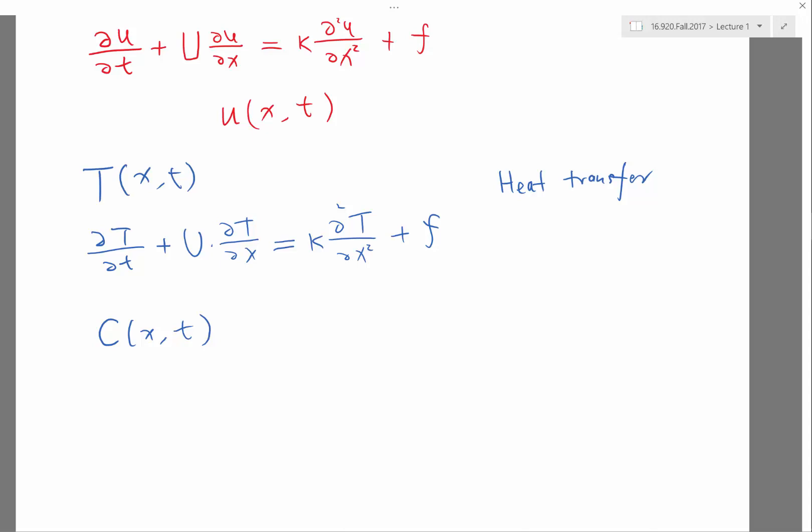Student question: So f, is it a function that depends on temperature or x or t, or is it a constant? It can be either. The thing that is important is that this term f is not going to be differentiated with respect to either x or t. That's what we call an algebraic term. These are all differential terms. So f may depend on anything but in an algebraic way. For example, it depends on the temperature locally but doesn't depend on the gradient of temperature.